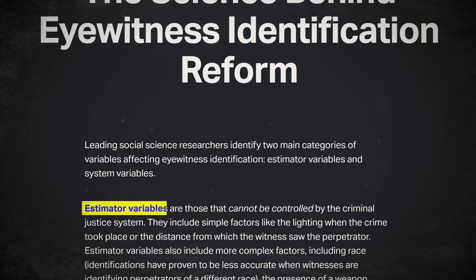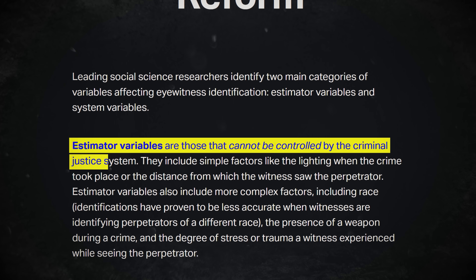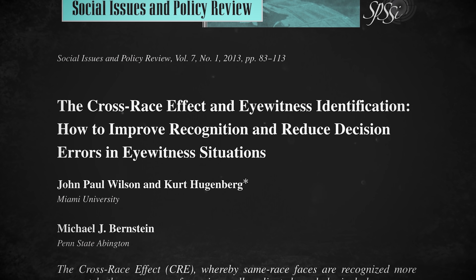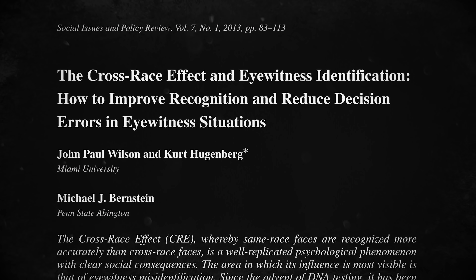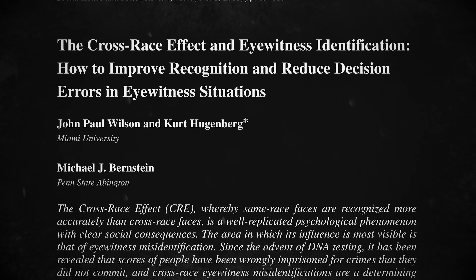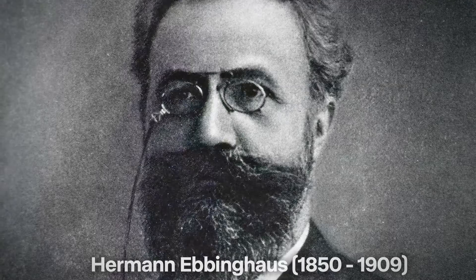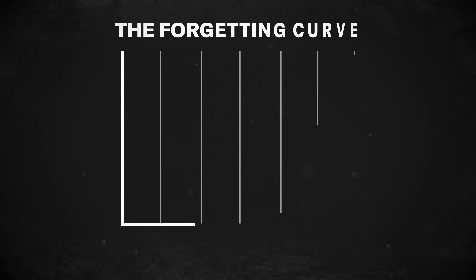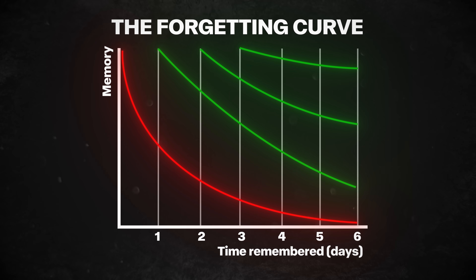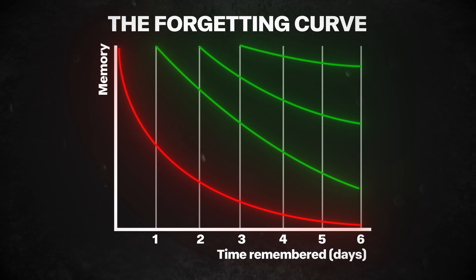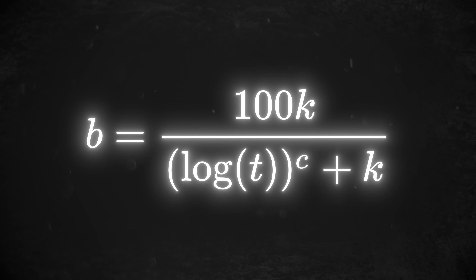How can the truth compete with that? Estimator variables are the parts of eyewitness identification that police can't control — cross-racial IDs tend to be less accurate than IDs within a witness's race. That isn't the police's fault. People think different things, and they just plain see different things, from an optical illusion to the colors of a dress. But the real enemy of memory is time. Herman Ebbinghaus's forgetting curve provides a visual representation of how quickly your memory can erode. And as early as the 1880s, his equation expressed the vulnerability of memory over time.